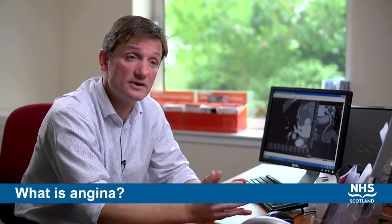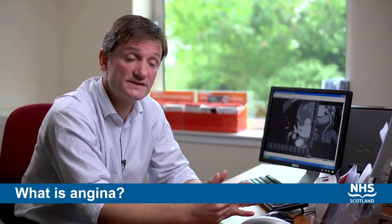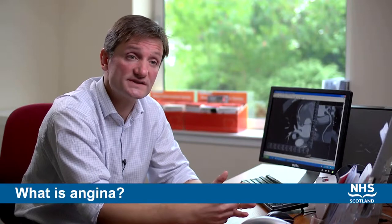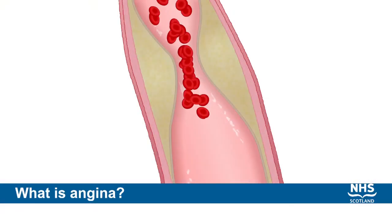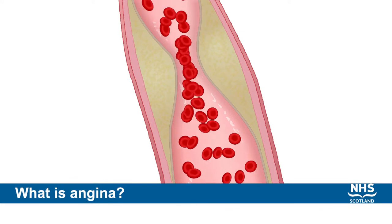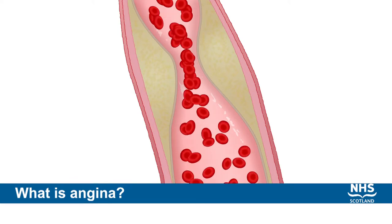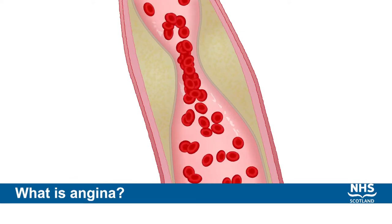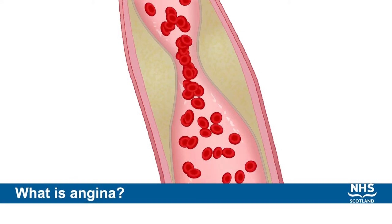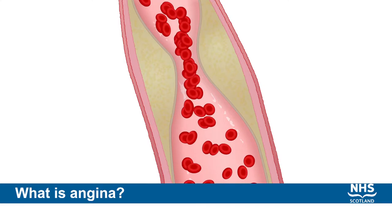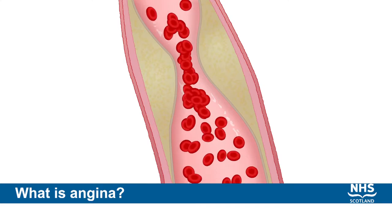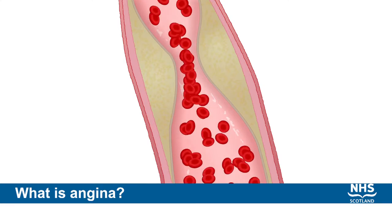Coronary artery disease begins when the coronary arteries — the arteries that supply blood and oxygen to the heart muscle — become narrowed. The narrowings are caused by a gradual buildup of fatty deposits within the artery wall, and this process is known as atherosclerosis.